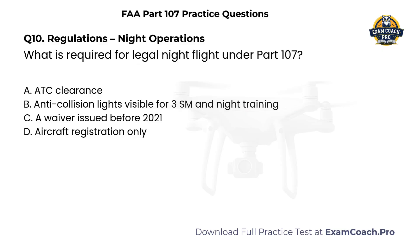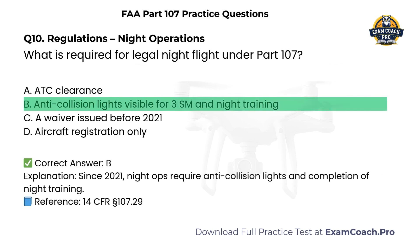Regulations. Night operations. What is required for legal night flight under Part 107? A. ATC clearance. B. Anti-collision lights visible for three statute miles and night training. C. A waiver issued before 2021. D. Aircraft registration only. Correct answer: B. Since 2021, night operations require anti-collision lights and completion of night training.